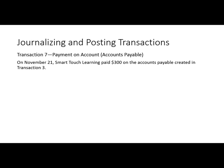Continuing on with our Chapter 2 analysis and looking at these same transactions we looked at in Chapter 1, only looking at journal entries. Here we have Transaction 7, which is a payment on account.